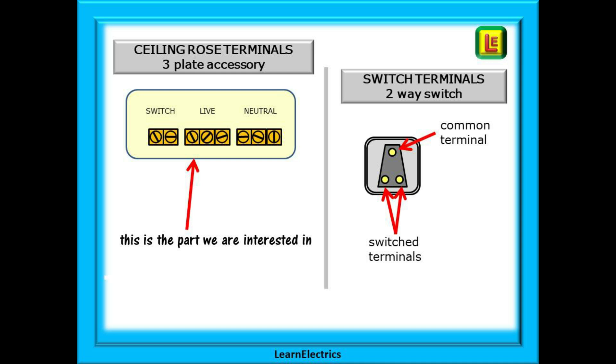Also shown here are the terminals for a two-way switch. One of the holes will very obviously be separate, a little further away from the other two. This is the common terminal and on some switches it may even be marked as COM for common. The other two holes are the switched contacts and only one of these is connected to the common at any one time depending on the switch position.